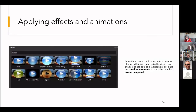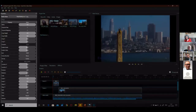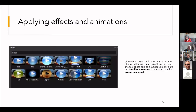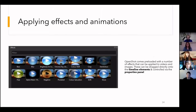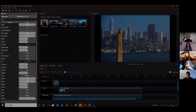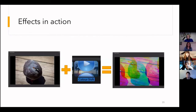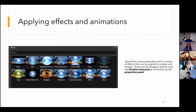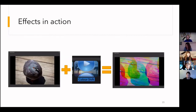Before we move on, a couple of people were asking about applying effects and animations. In OpenShot there is a dedicated effects panel — just above the timeline there's an effects button. Clicking it brings up a window with options like brightness adjustments, blurring, saturation adjustments, and other effects. Stuff like brightness is useful if you shoot a shot that's underexposed — you can fix it in the effects panel. One of the more unusual effects is a color shift, which gives footage a very psychedelic look.